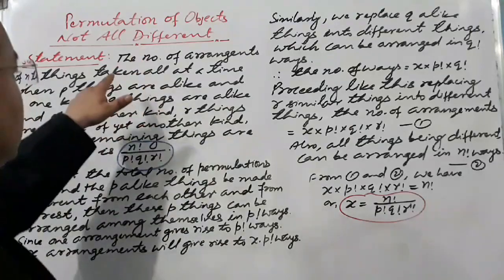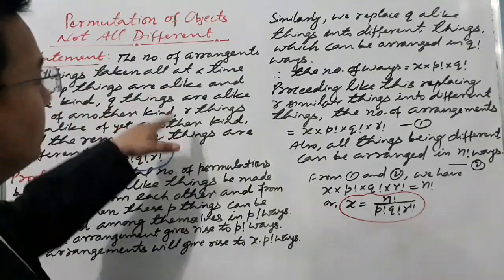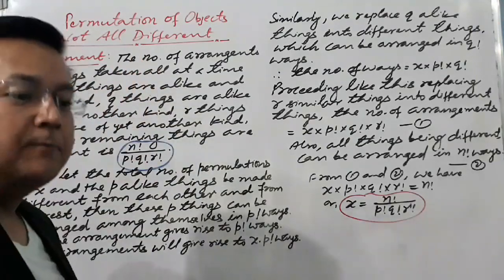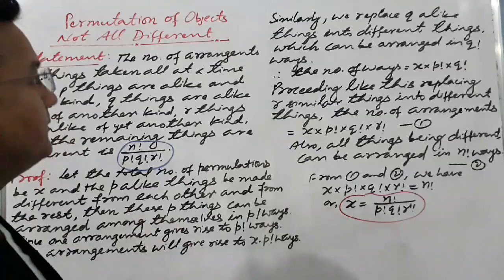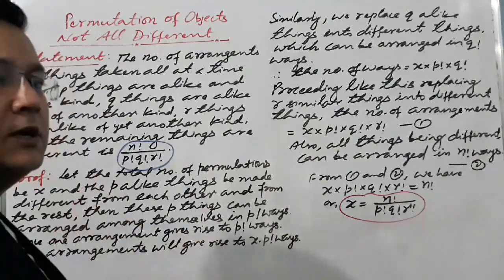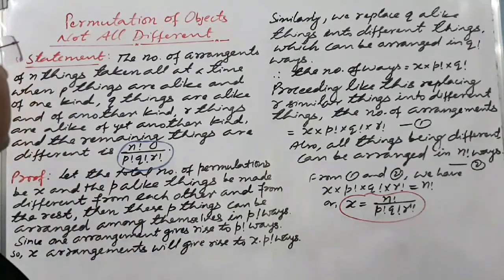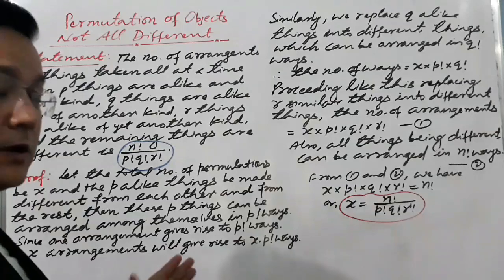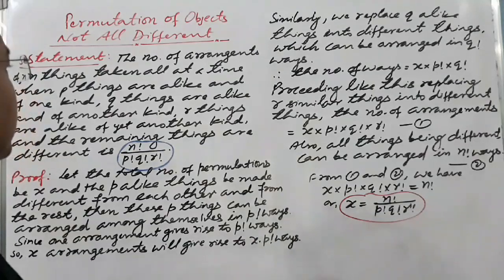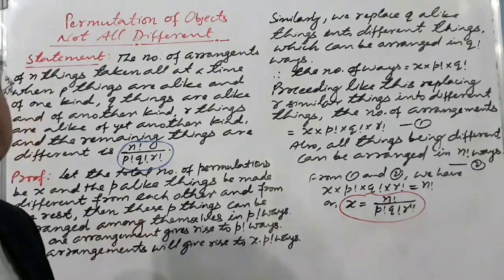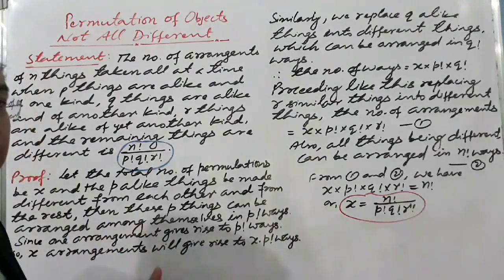On this topic there is one theorem. I'm going to explain this theorem and thereafter I will tell you how to use it to evaluate the permutations of objects not all different, and in which case we can use this theorem.